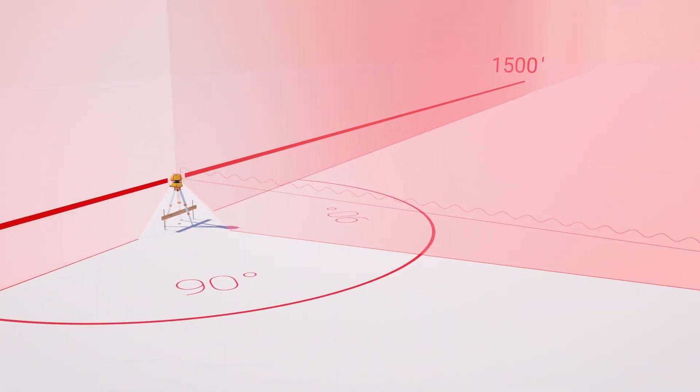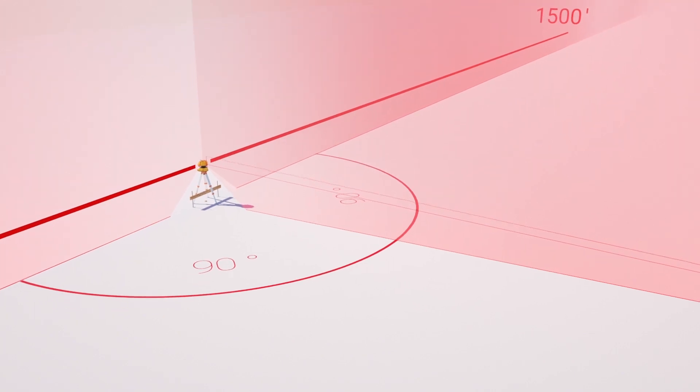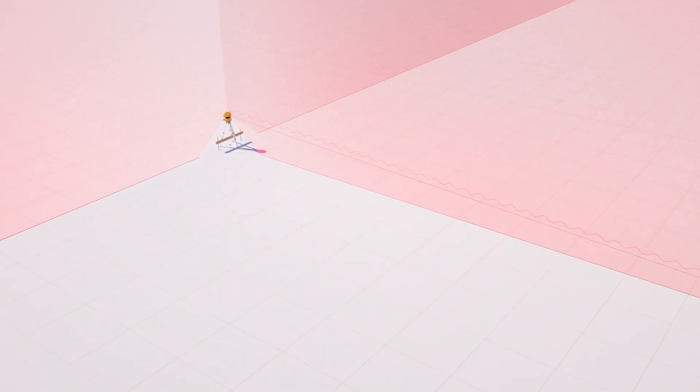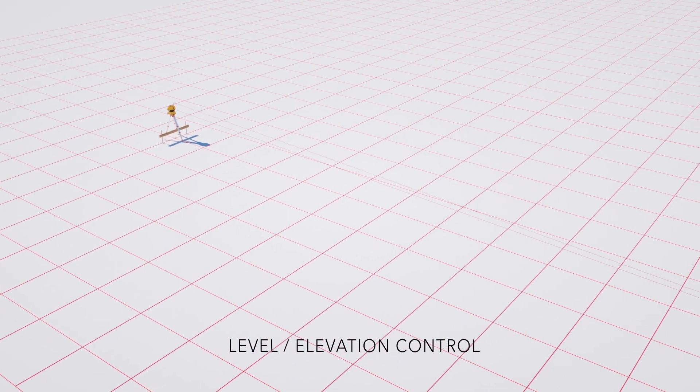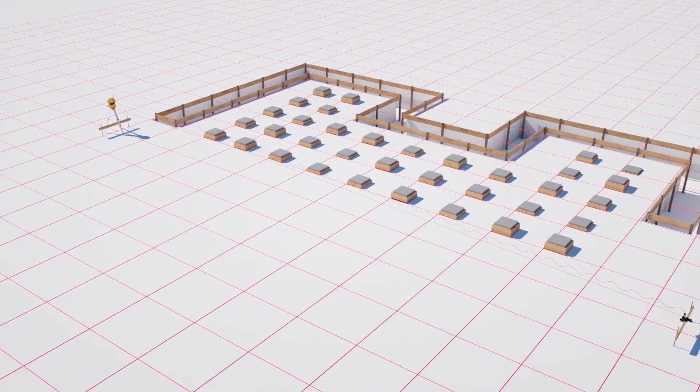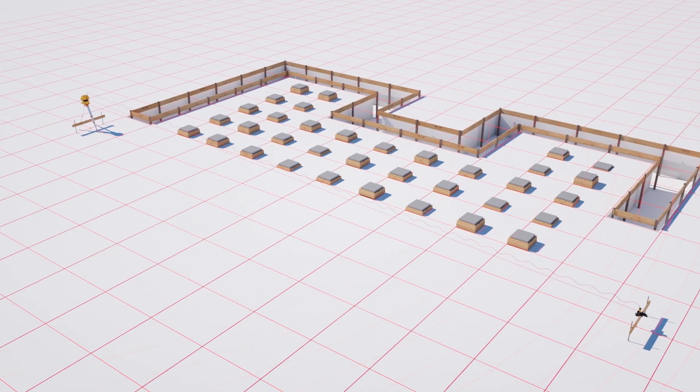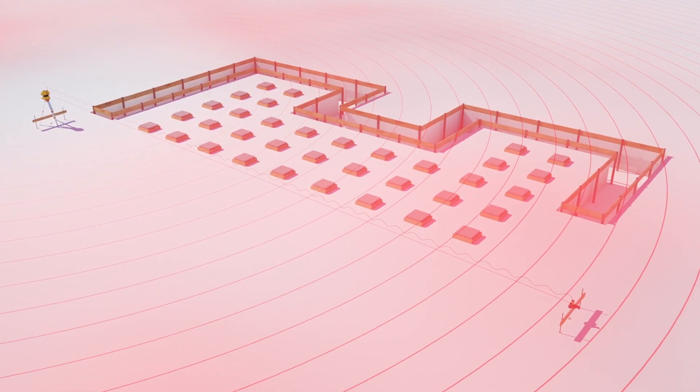While the Quad 4000 is producing line and square, it also transmits a 360 degree level plane over the entire job site allowing a single person to establish line and grade for various applications like building layout, offset squaring, edge forms, columns, anchor bolts, screeds, and template placement.